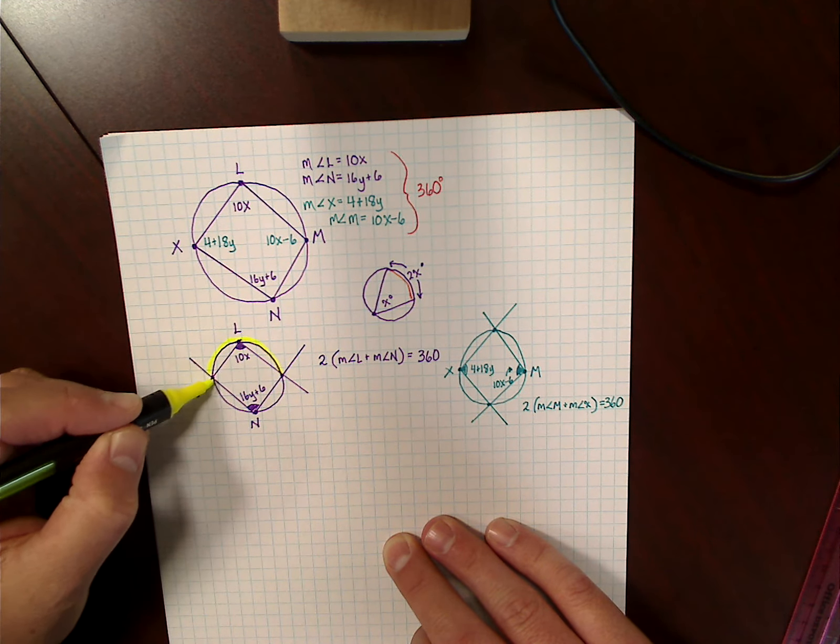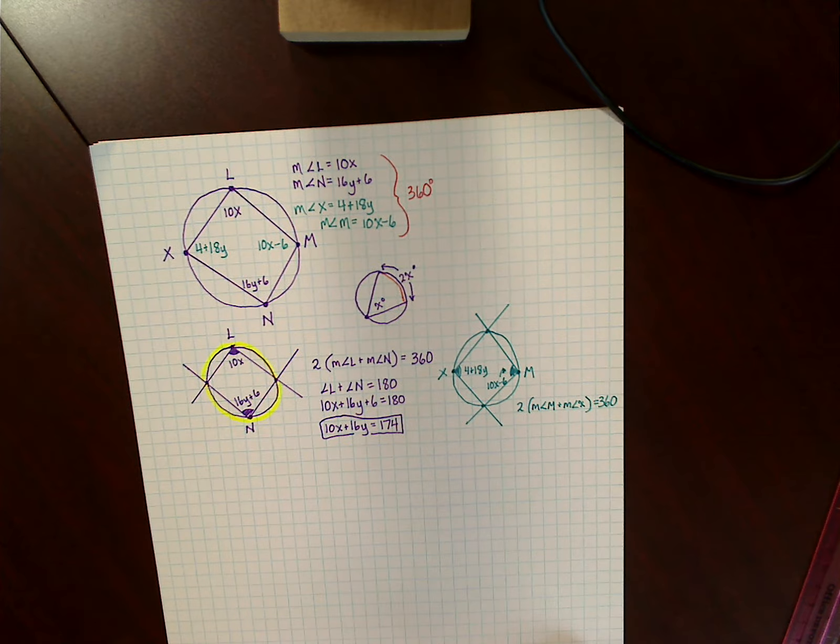Then I substitute the expressions that represent the angles, so L is 10x, and N is 16y plus 6. So 16y plus 6. And again, that equals 180 degrees. So then I combine my like terms, set up an equation in standard form. So I end up simplifying this, and it becomes 10x plus 16y is equal to 174. So that's one equation that I'm going to be working with.